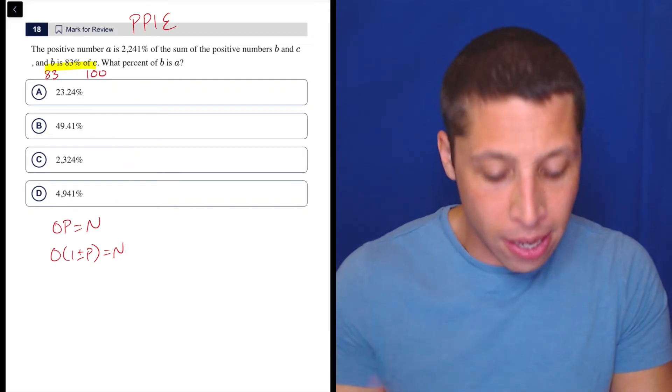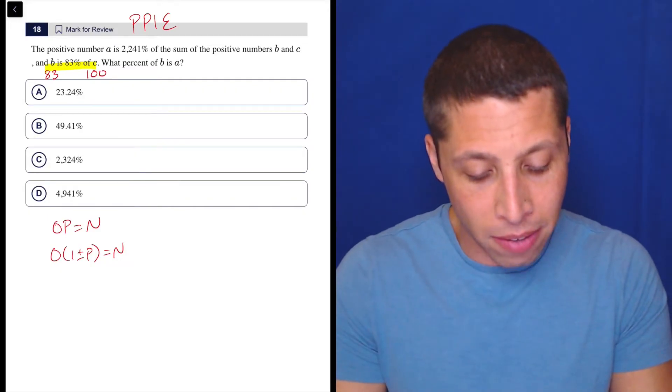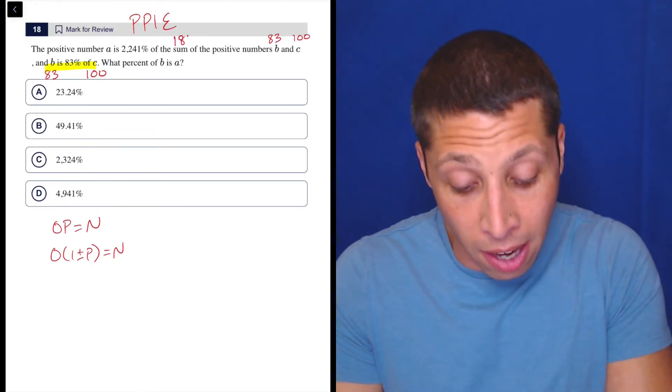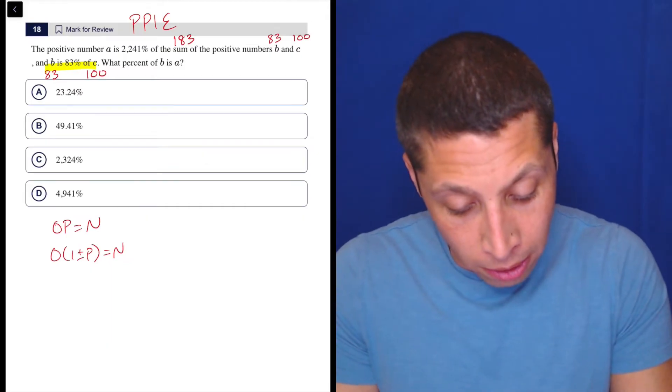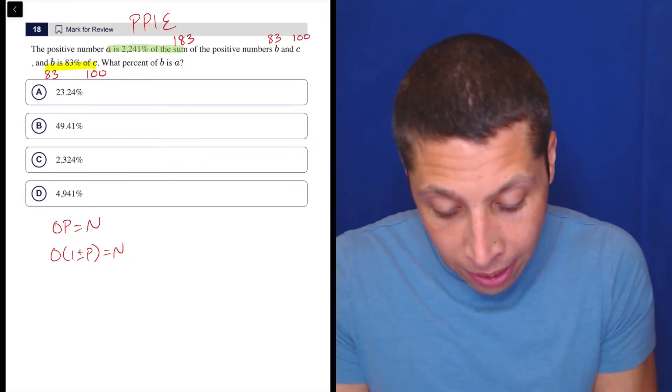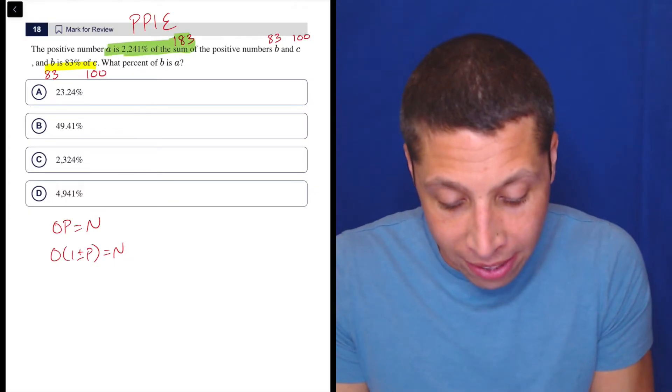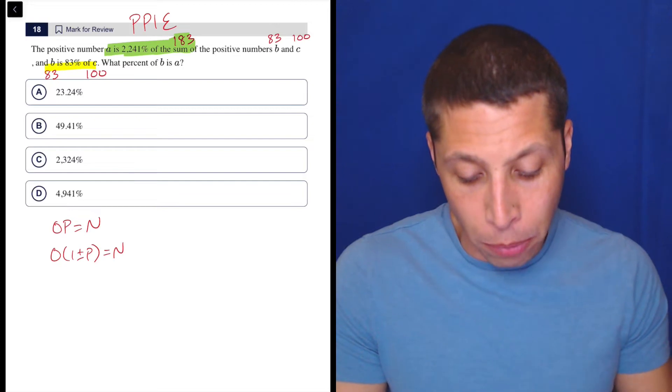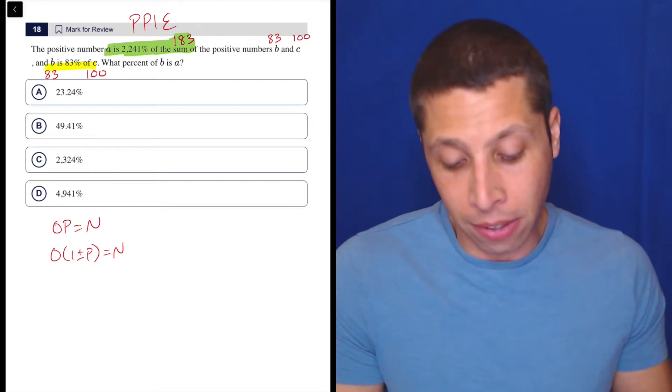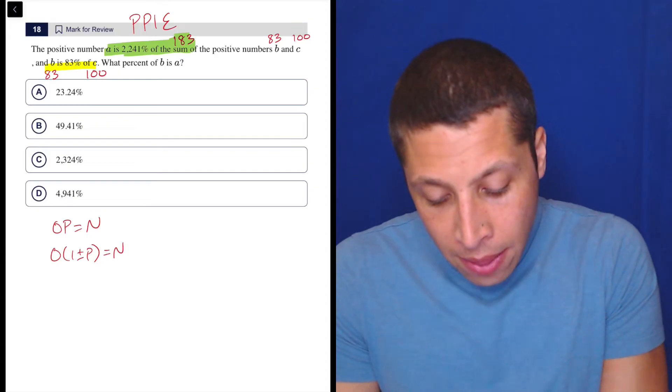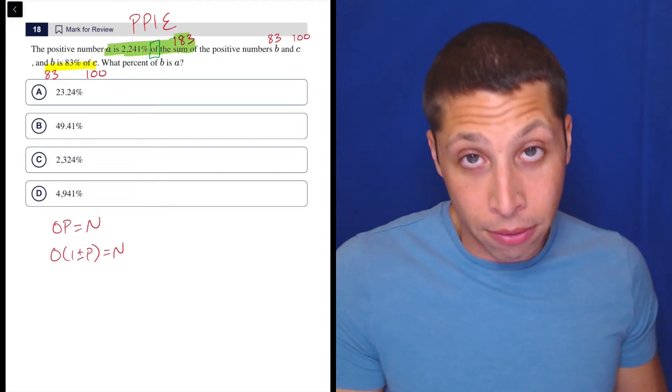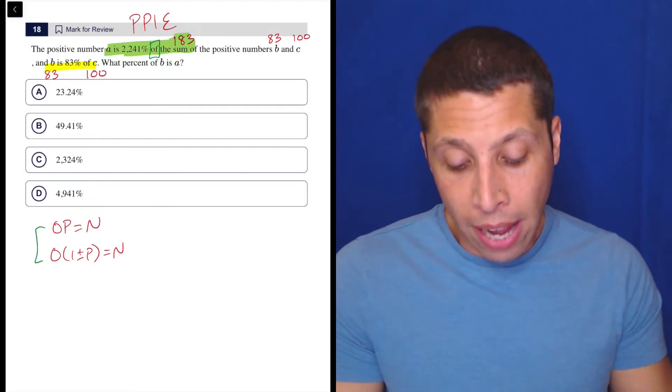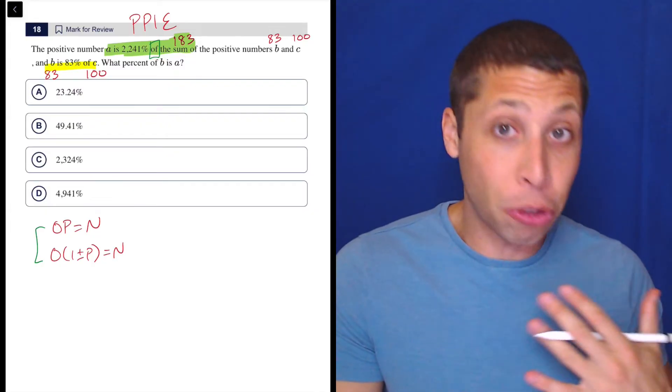Now I can follow my instruction in the first part more easily, because the positive number A is this percentage of the sum of the positive numbers B and C. So again, just be consistent. B is 83, C is 100. So the sum is 183. So it's really just this part here. Let me just really highlight it. That matters to me now. This is it. This is all I need: 2,241% of the sum of 183. So I don't even need the sum part. The key word in here is the 'of' because there are two open formulas and we don't really have a percent increase here. We just have a percentage of something. This is a very traditional percentage. So I'm going to use this formula.